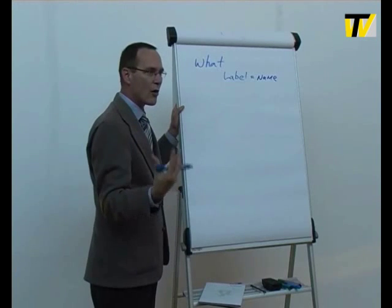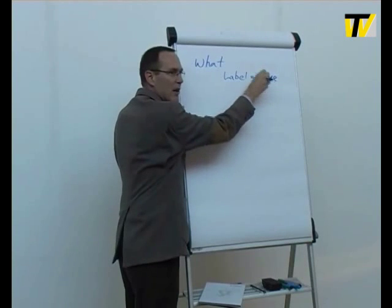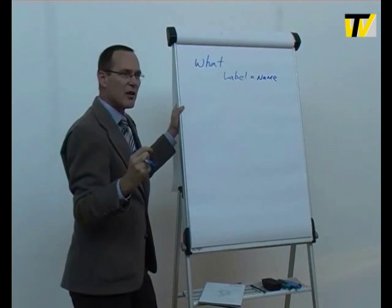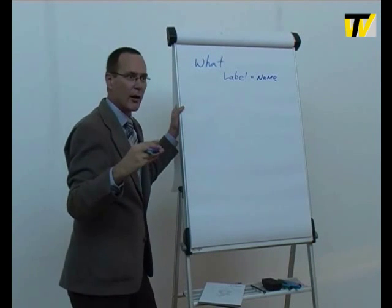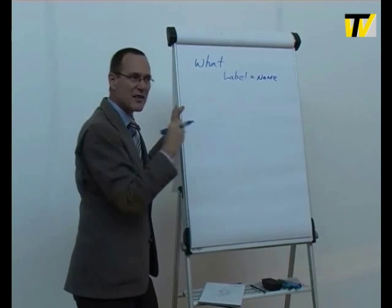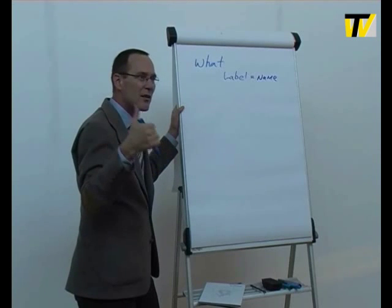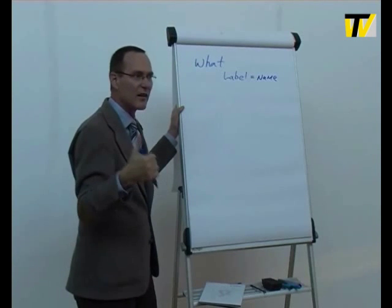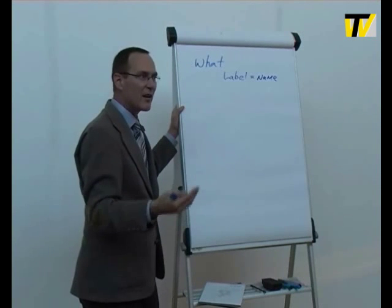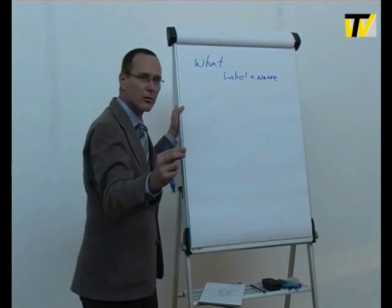So, when you are describing something, use the exact same name and the exact same label every time. And in technical documentation, unlike literary writing, you do not use synonyms. You choose one name for a thing and keep that name consistent and use it again and again. For example, we don't say 'click it' — we say 'click button.'